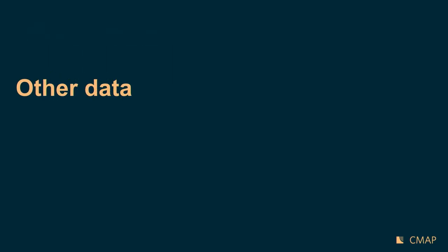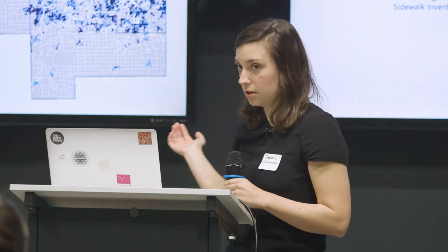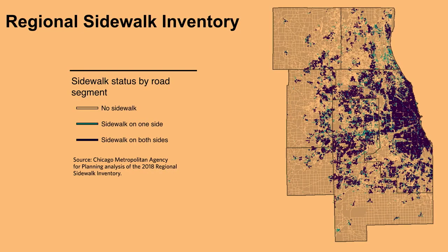Before wrapping up, a plug for some other data products at CMAP — it makes us really happy when people use our data, so let us know. One thing we're really excited about, just released about a month ago, is a regional sidewalk inventory: a shapefile that has every road in the seven-county region coded whether it has sidewalk on one side, both sides, or no sides of the street. We think this will be really helpful for local municipalities and community advocates.